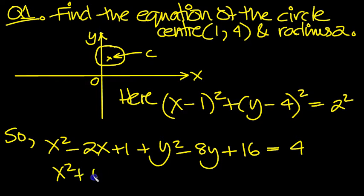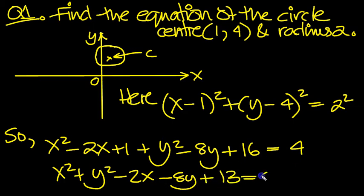So we get x squared plus y squared, minus 2x, that's this term here, minus the 8y. Now the numbers, 16 and 1 is 17. Take 4 when you move it over, it's 13. So it's plus 13 equals 0.